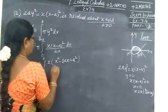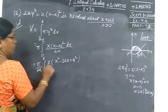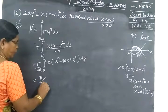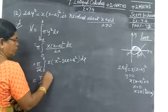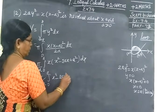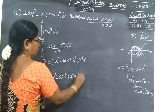2A you take outside. Now take x inside. π by 2a integral 0 to A, x³ minus 2Ax² plus A²x dx.